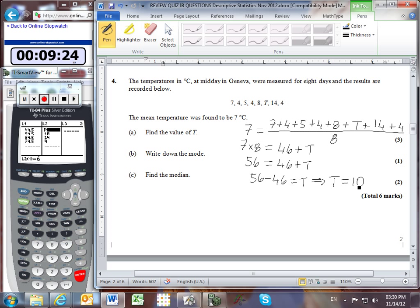Part B asks for the mode, the number occurring most frequently. With T equal to 10, the number 4 occurs three times, so the mode is 4 degrees Celsius.